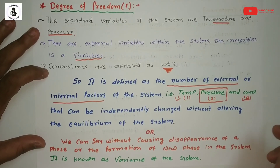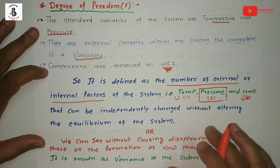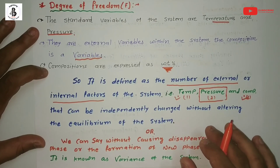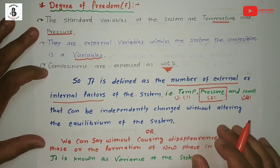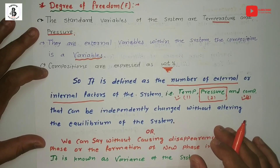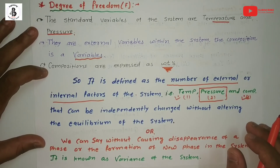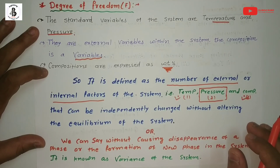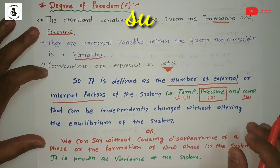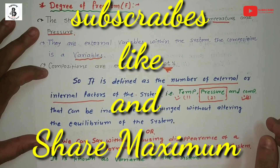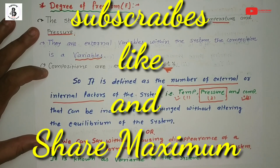These terminologies — system, phase, components, and degree of freedom — are the main terminology for understanding different phase diagrams as well as the Gibbs phase rule. I hope you understand all this terminology, and it will help in the future for understanding various phase diagrams. If you like this, please subscribe and share for more mechanical engineering tutorials. Thank you so much and keep watching.